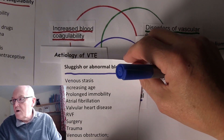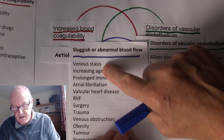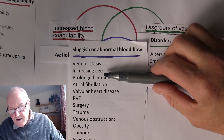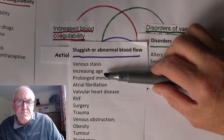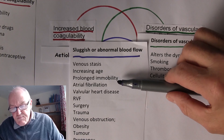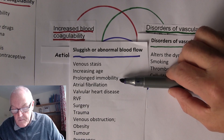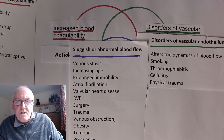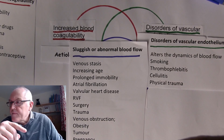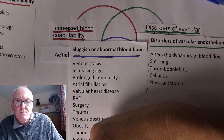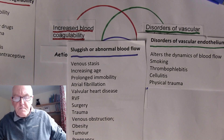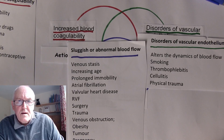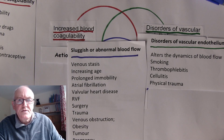Sluggish or abnormal blood flow refers to venous stasis. This is more common with increasing age, and reduced mobility is one contributing factor. Prolonged immobility in anyone is a risk factor. Consider a patient undergoing surgery who is immobilized on the operating table — anaesthetists will often give muscle relaxing drugs so surgeons can access body cavities, but this has the side effect of reducing muscle tone in the leg muscles and therefore the component of venous return facilitated by muscle tone is lost.